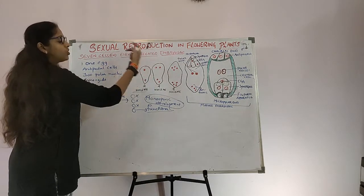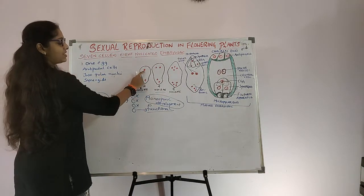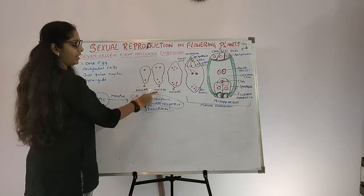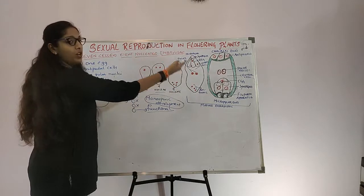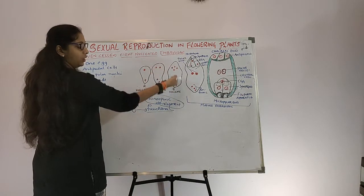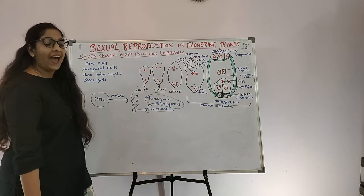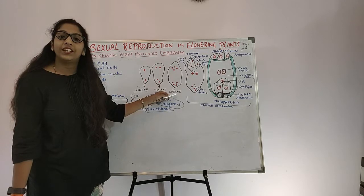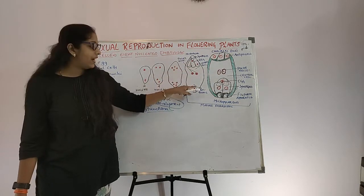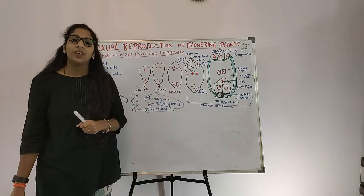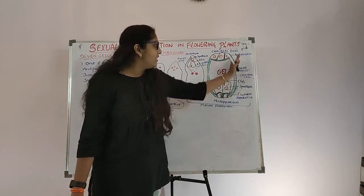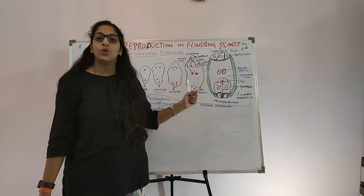One more sequential division takes place forming the 4-nucleate stage — again the nucleus divides mitotically, giving 2 nuclei at each pole, totaling 4. Then one more sequential mitotic division results in the 8-nucleate stage, with 4 nuclei at each pole. After the 8-nucleate stage, cell walls are laid down and it is organized into the typical female gametophyte — this is the mature embryo sac.